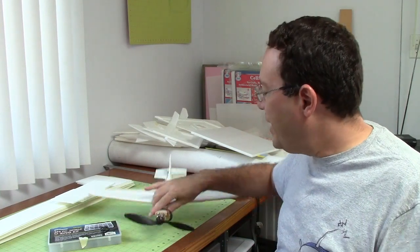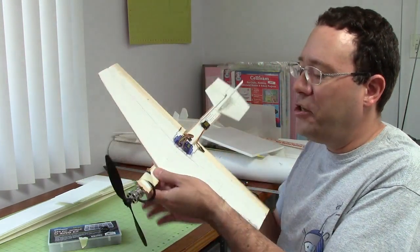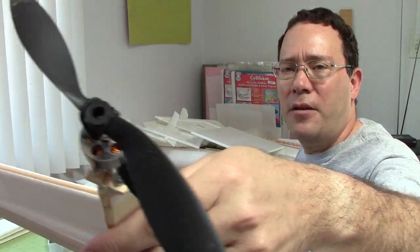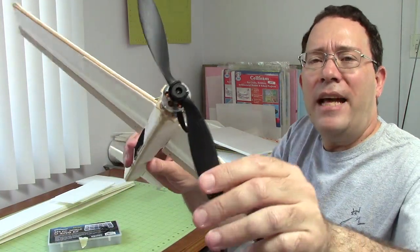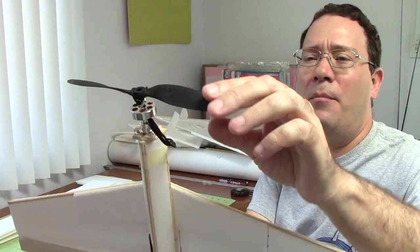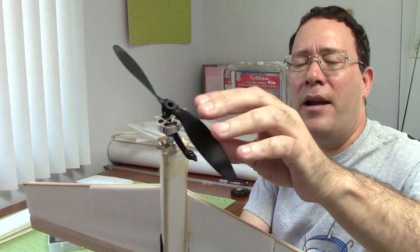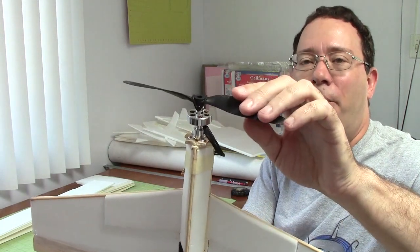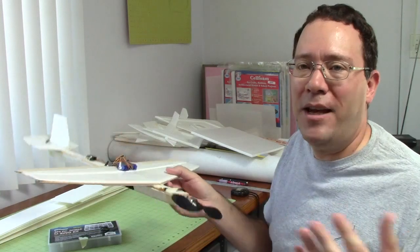If you fly small electrics like this one, you may want to consider using a so-called prop saver. The prop saver is like a rubber band that's actually holding the propeller in place, so if you hit the ground and crash, the propeller can just bend out of the way and it's not going to break. It's actually saved me a lot of propellers over the years.